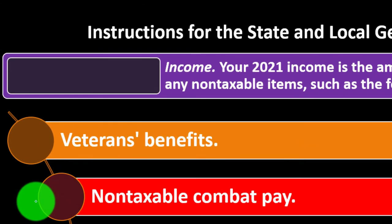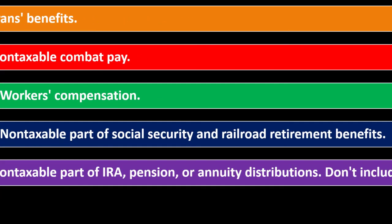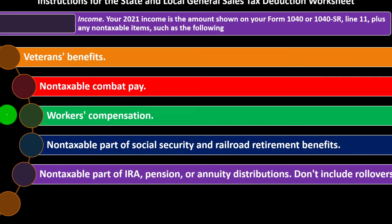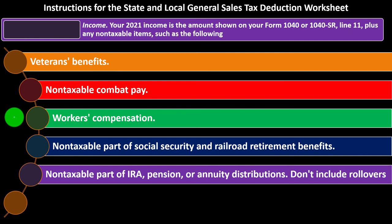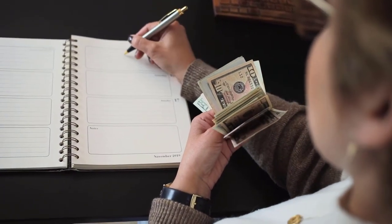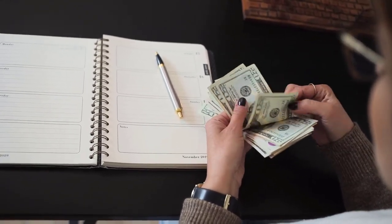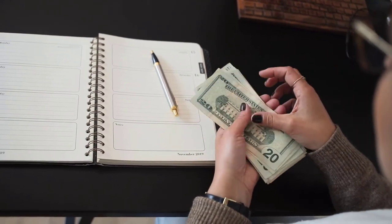Non-taxable income includes veterans benefits, non-taxable combat pay, workers' compensation, and the non-taxable part of Social Security. The tables are going to be based on vital conditions to determine what the general sales tax would be — one of those being the income line. You would think that if people had more income, they would have more sales tax to pay and thus a higher sales tax deduction.